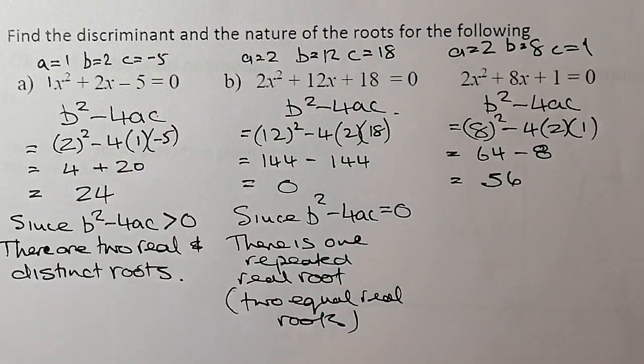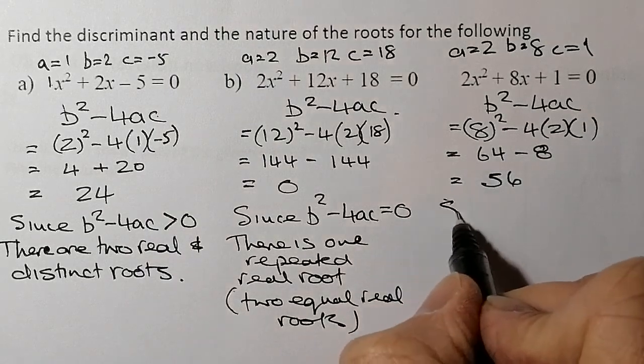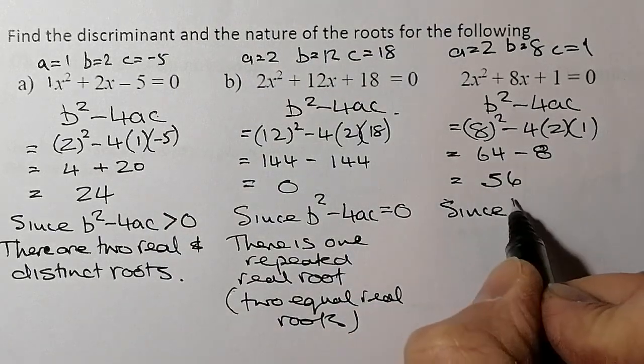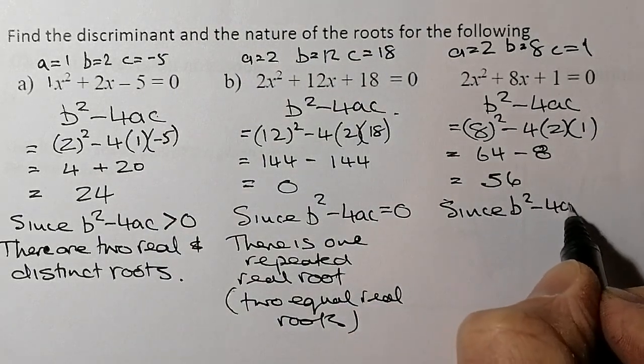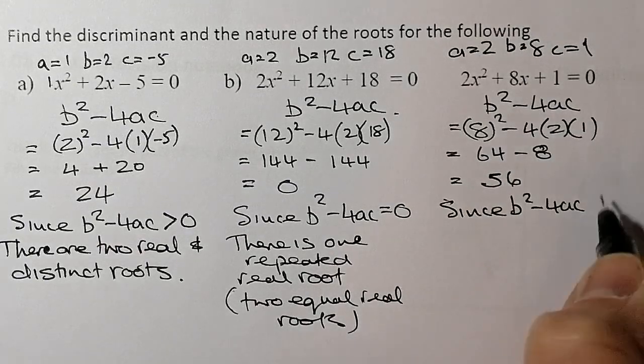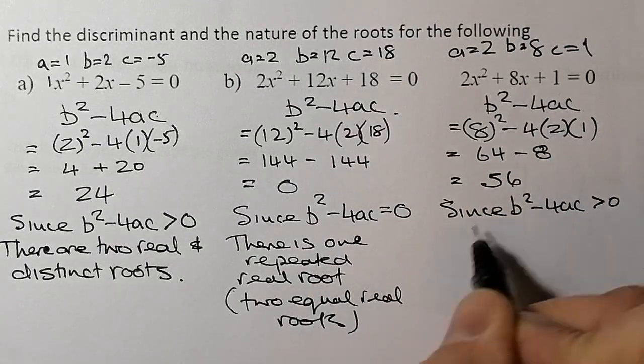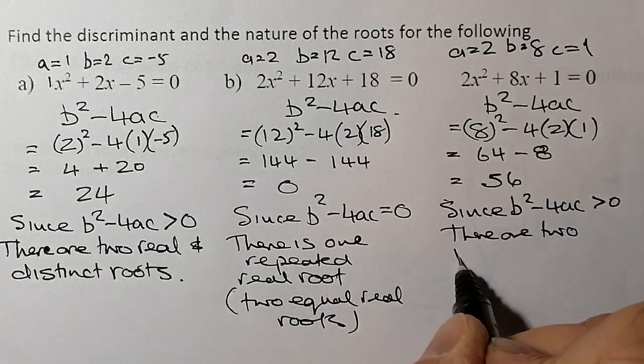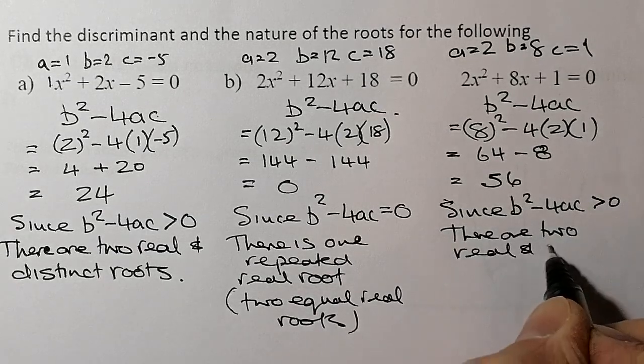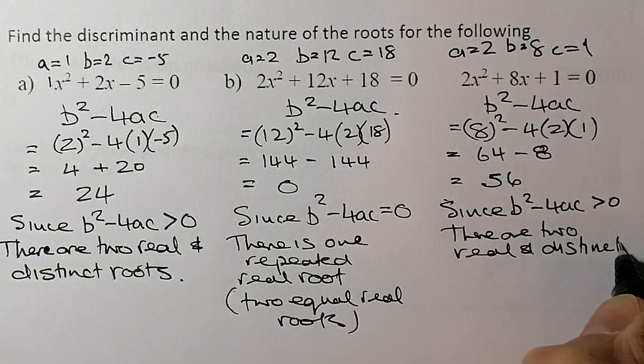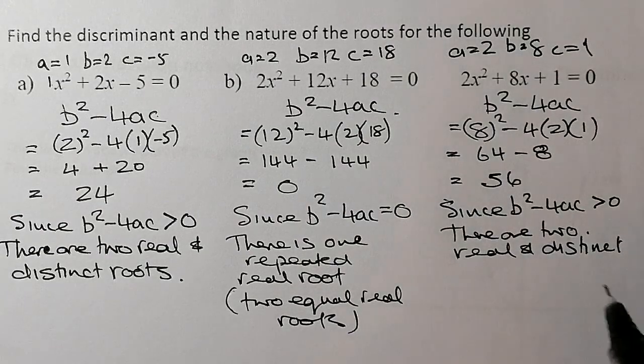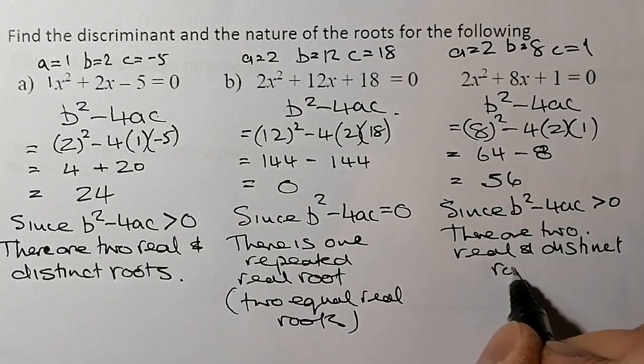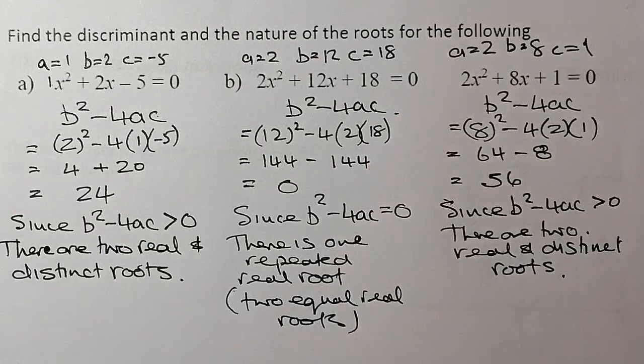So that's the same as the type of thing we would say for A. So since, remember, we need to make a statement on this one. Since b² - 4ac, what we're trying to work out, the discriminant is greater than 0, there are two real and distinct, that means two real and separate answers I'm going to get out, and these answers are really called roots. So there are two real and distinct roots.